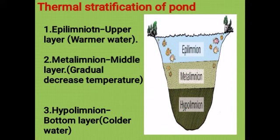In the thermal stratification of a pond, the first layer is the epilimnion, which is the upper layer containing warmer water. The second is the metalimnion, the middle layer, where temperature gradually decreases. The last one is the hypolimnion, the bottom layer, which is the coldest, containing cool water.